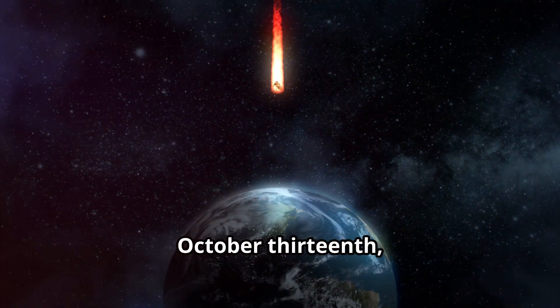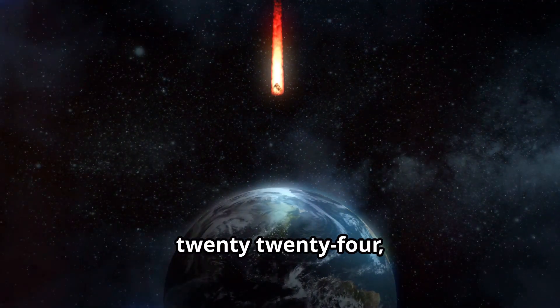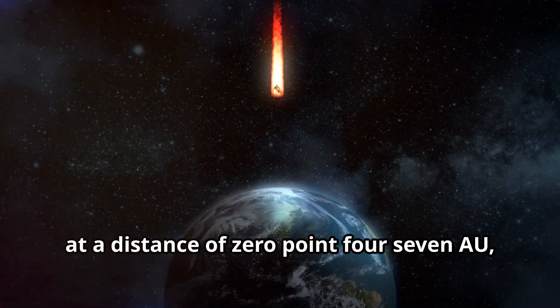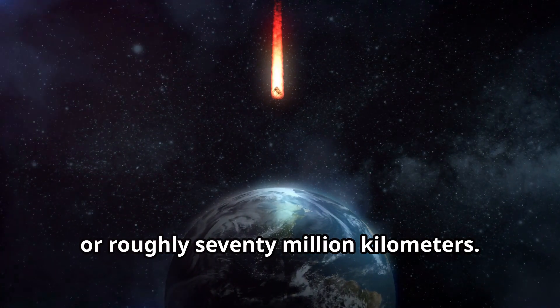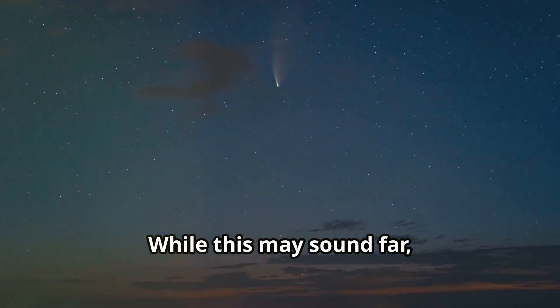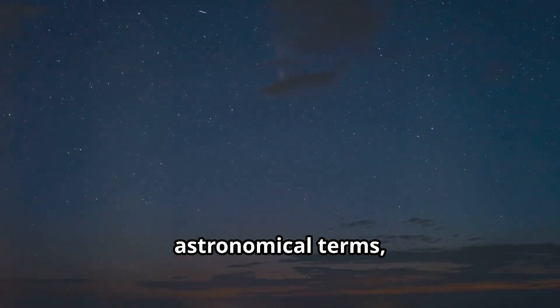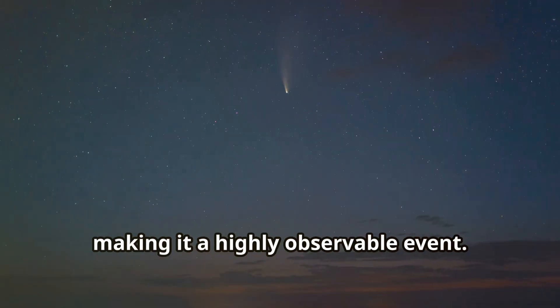The comet will pass closest to Earth on October 13, 2024, at a distance of 0.47 AU, or roughly 70 million kilometers. While this may sound far, it's considered relatively close in astronomical terms, making it a highly observable event.